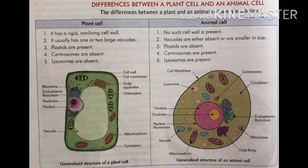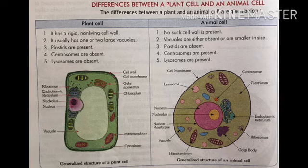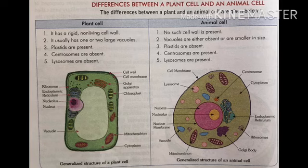Everyone draw these plant cell and animal cell in their copies. Everyone draw three pictures: one is microscope, second is plant cell, and third is animal cell. I hope everyone understood what I taught in this video. If there is any confusion, ask in class. Everyone watch this video and write the question answers that I showed in this video.